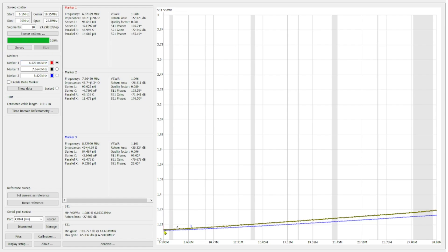When we go down to 6.5 megahertz before the 40 meter band, we are at 1.088, which is still pretty good.